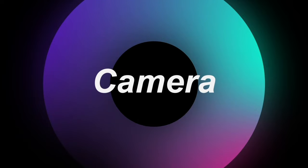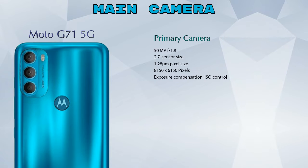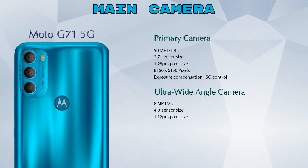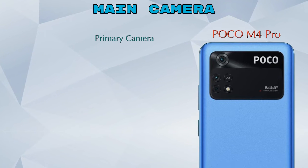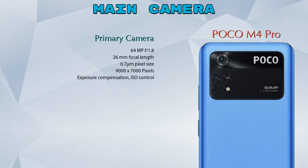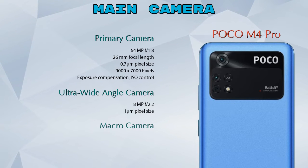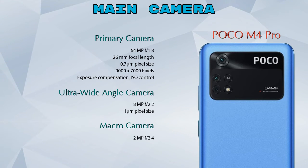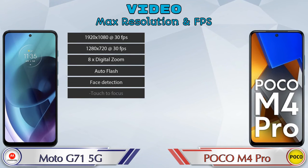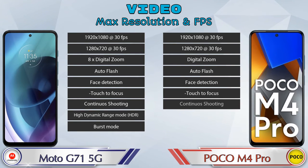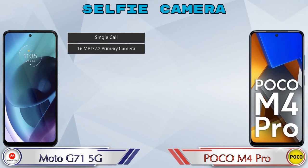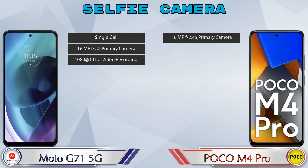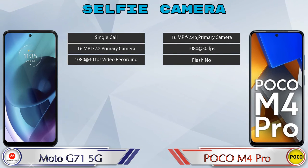Now let's look at the camera details. For the rear camera, the G71 5G has three cameras: a primary camera, an ultra-wide angle camera, and a macro camera. The Poco M4 Pro also has three cameras: a primary camera, an ultra-wide angle camera, and a macro camera. For video, the G71 5G has nine different feature options and the Poco M4 Pro has eight. For the front selfie camera, both phones have a single camera with three different features available.